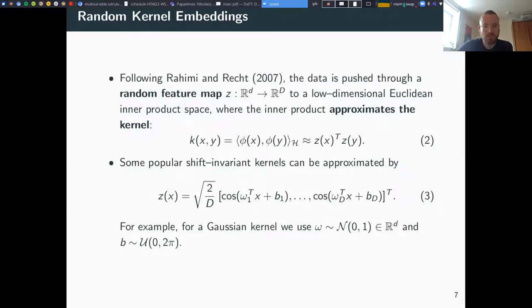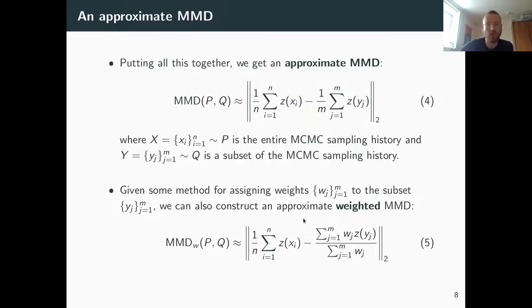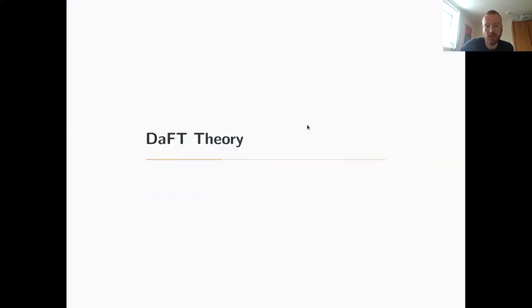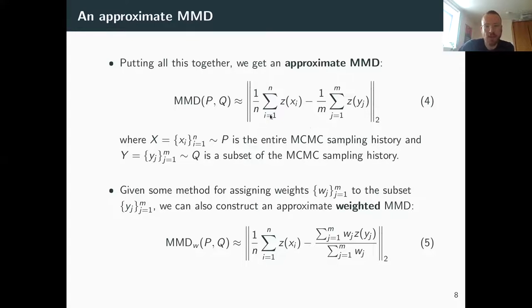So we can put all this together, our definition of the MMD and this random feature map, and we get this norm of the two projections. So the first term here is all the samples, and we only need to compute that once. It's relatively cheap because it's just an inner product.